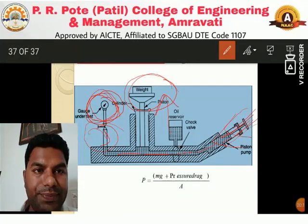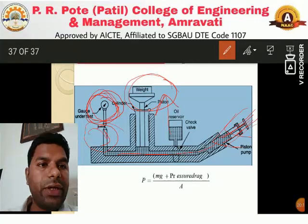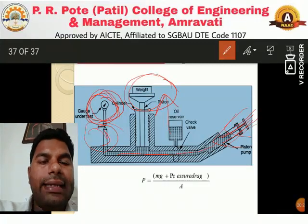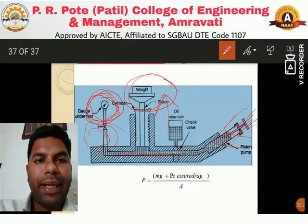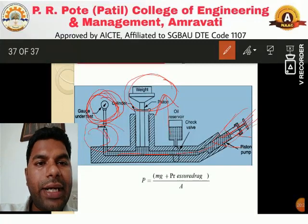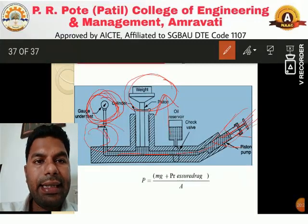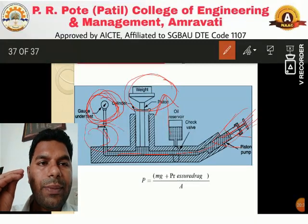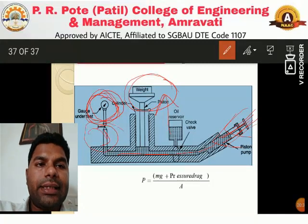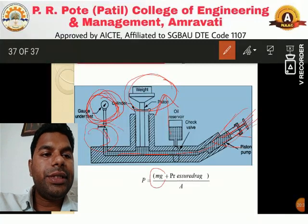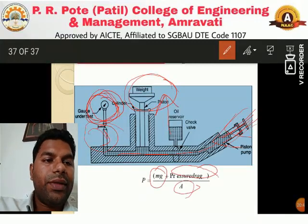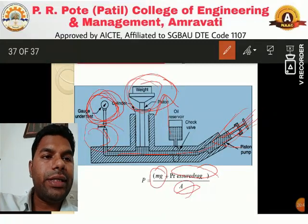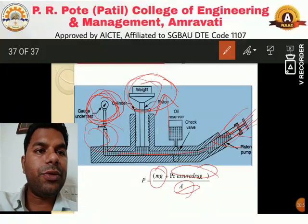Calibration is very important because without calibration we cannot use any device — we would not know what pressure corresponds to a particular reading. The dead weight pressure gauge is used to make this calibration. The formula used is: P = (mg + pressure drag) / area, where mg is the known weight force, pressure drag accounts for friction in the cylinder-piston model, and area is the piston area.